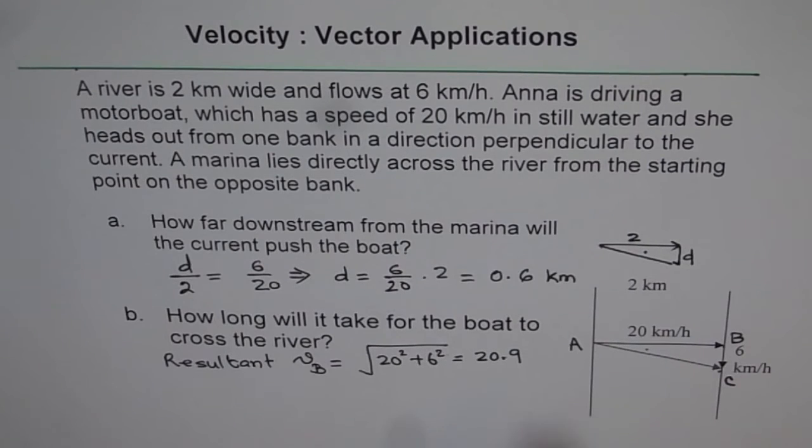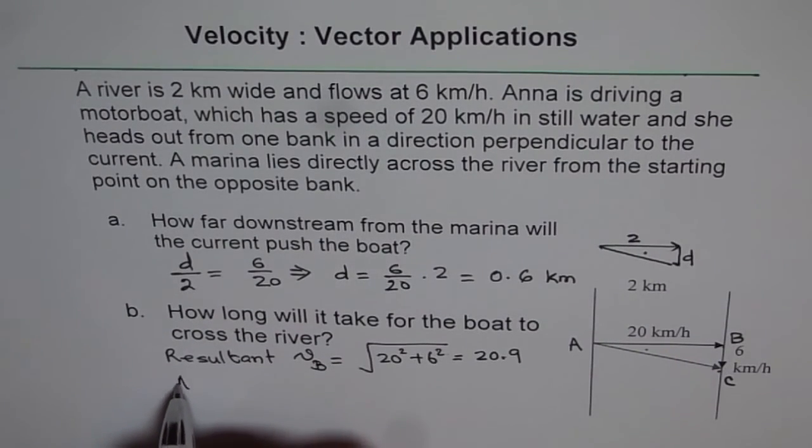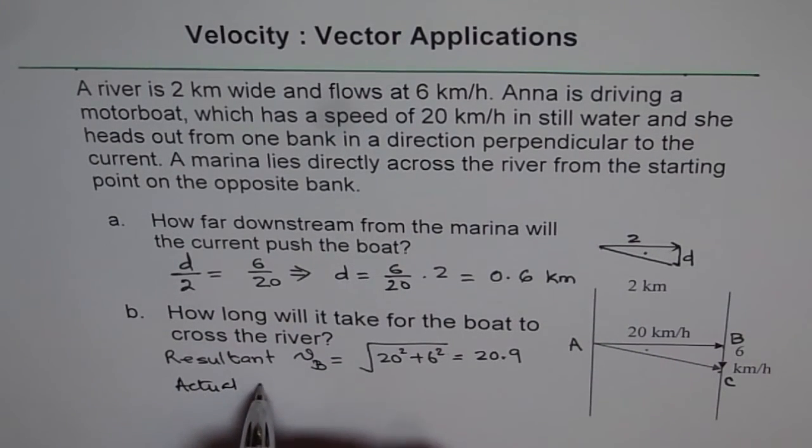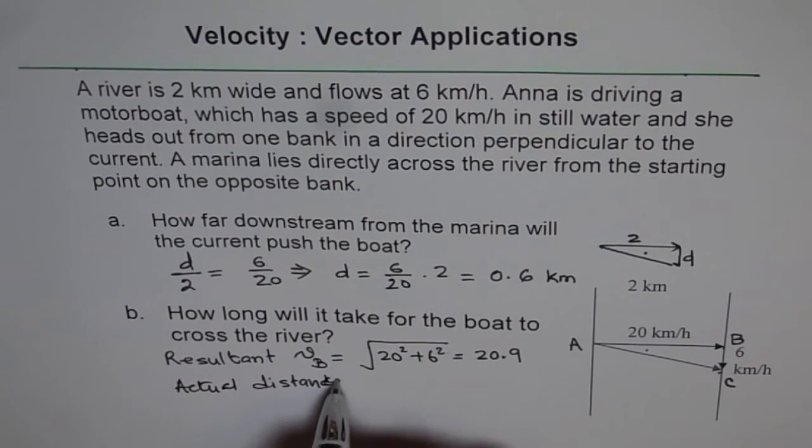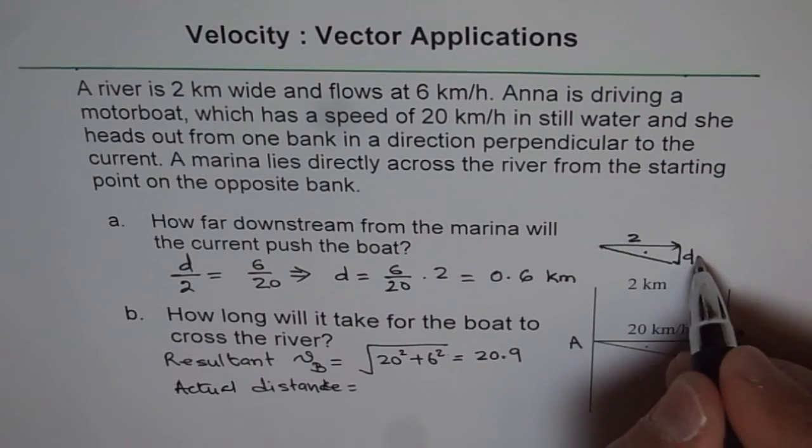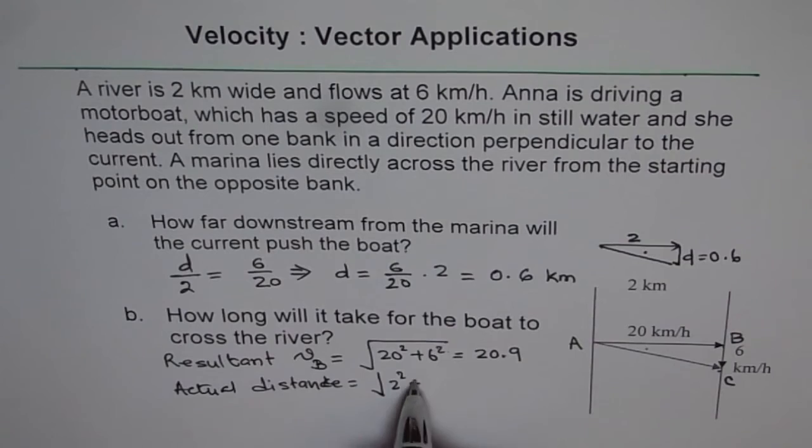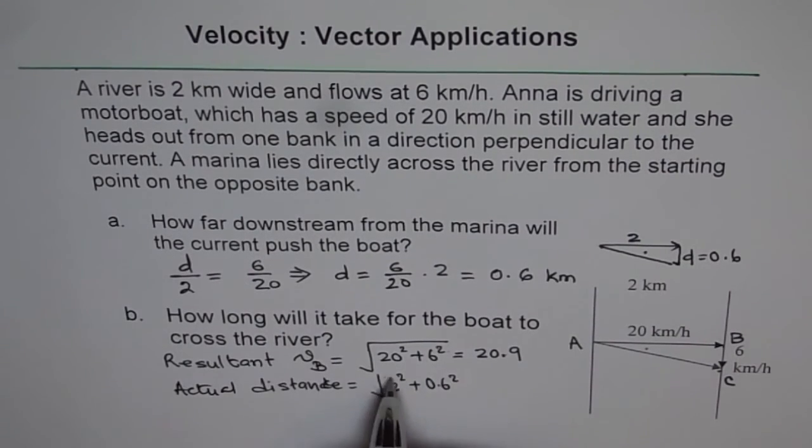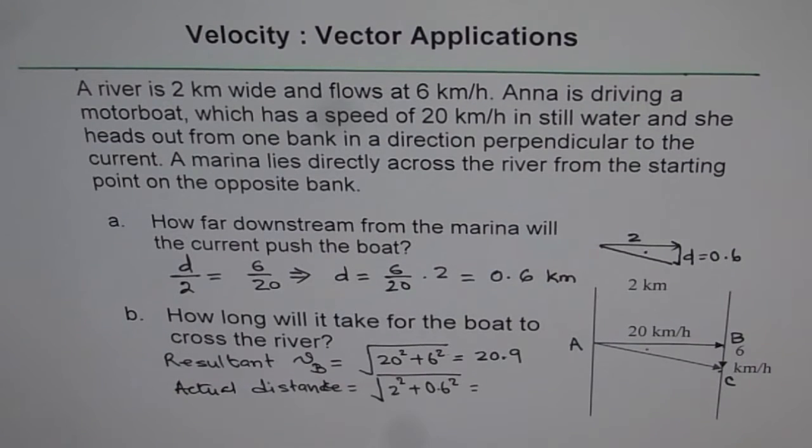Similarly, let us also figure out, what is the distance, actual distance covered by the boat? So we say actual distance, that is 2 square plus, we got this as 0.6. So that is 2 square plus 0.6 square square root. And that gives us 2.09.